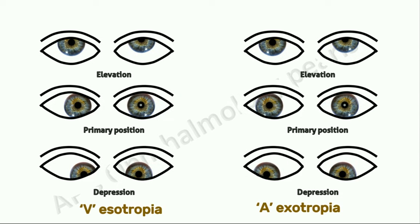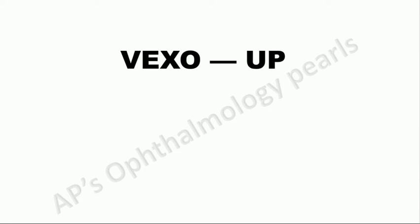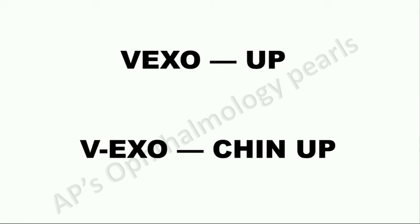Similarly, in a V-esotropia the convergence is less in upgaze, as is the divergence in an A-exotropia, so the patient adopts a chin-down posture. An easy way to remember this is 'vexo-up': in a V-exotropia, a chin-up posture is seen. Once you know one of them, you can derive the others. So V-exotropia and A-esotropia: chin-up posture. Conversely, V-esotropia and A-exotropia: chin-down posture.